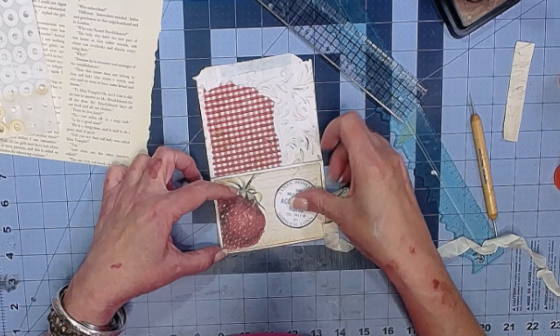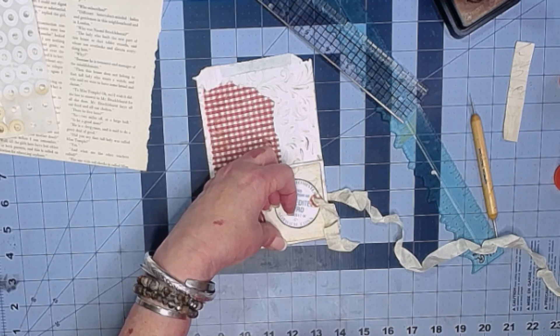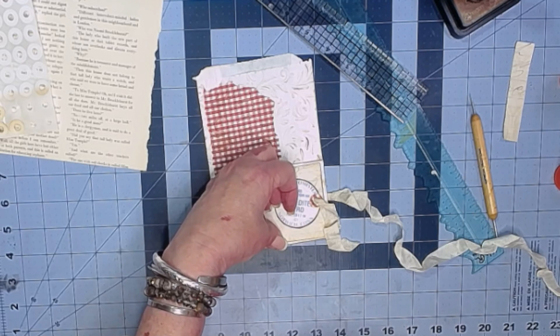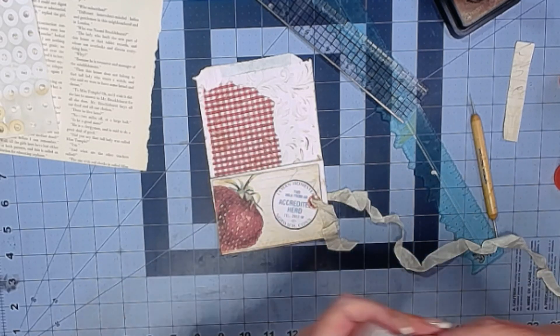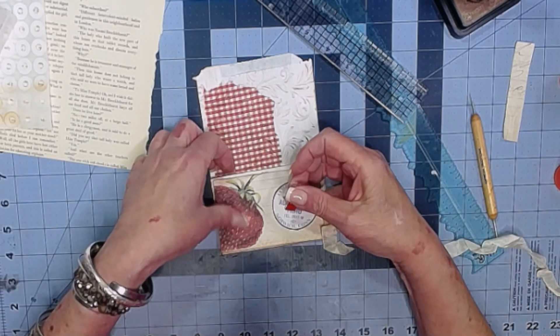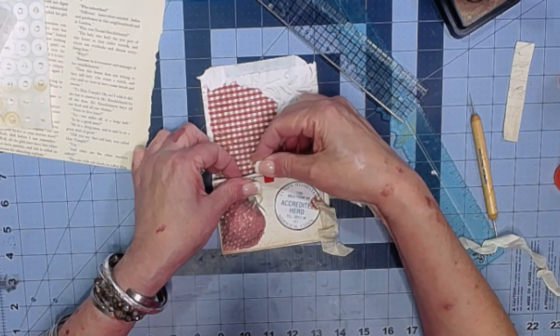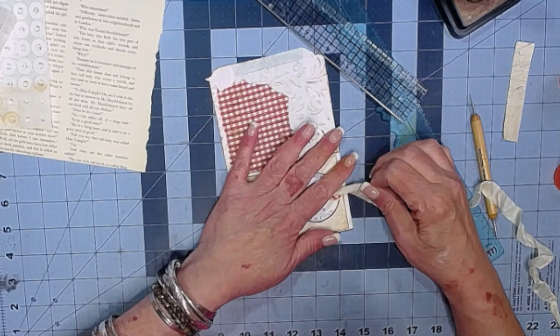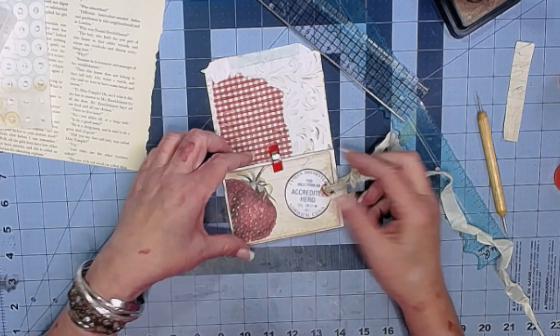So what I will do at this point, just to keep wrangling that, is I'm going to grab one of my bookbinding clips. So here's one of my little quilting clips. And I'll just stick it right there to hold this where I want it to be. I'll tie a bow.